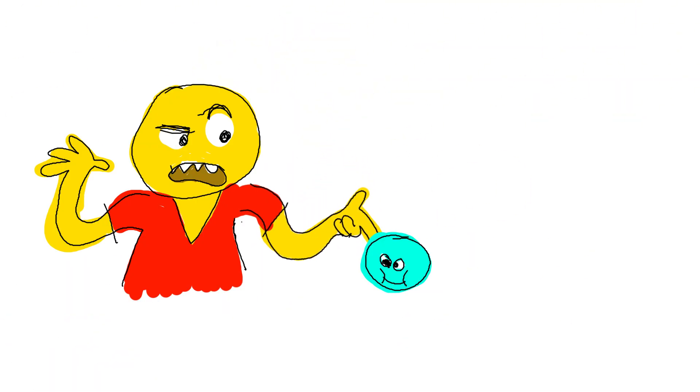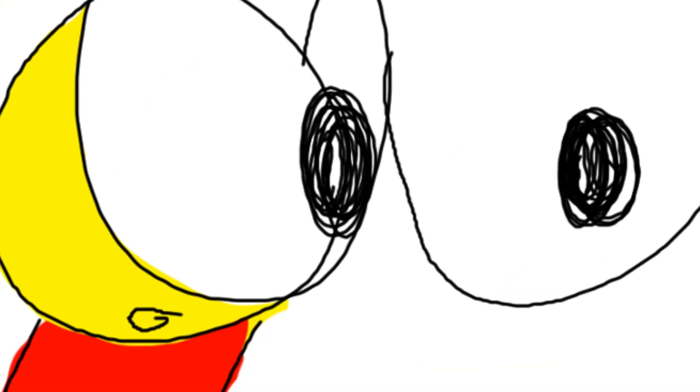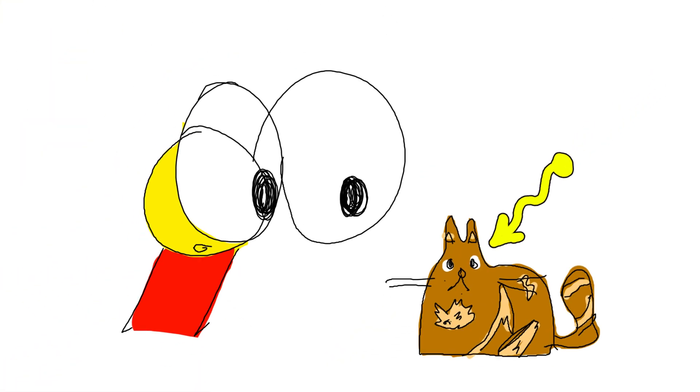Now that might seem weird. Why can't you just look at it? But let's think about what looking actually means. When you look at something, light from a source bounces off that object into your eyes. It's a physical interaction.